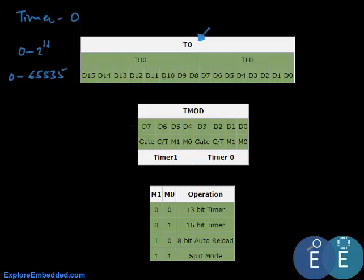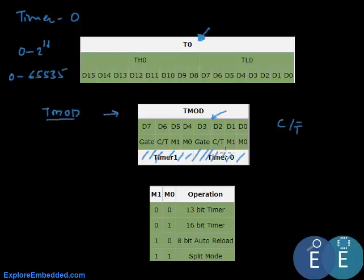There are various modes the timer/counter unit can be configured into, controlled by the Timer Mode register, TMOD. TMOD can be viewed as two nibbles — the lower nibble dedicated to Timer 0 and the upper nibble to Timer 1. The C/T bar bit is important: when this bit is 0, the unit acts as a timer; when it is 1, it acts as a counter.